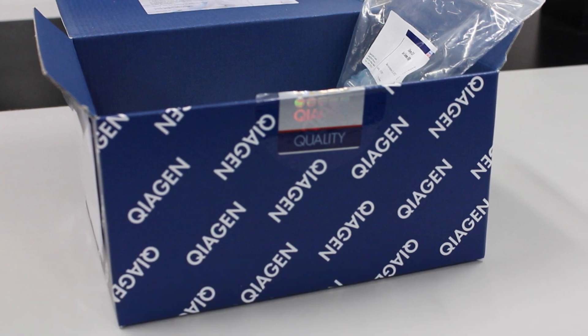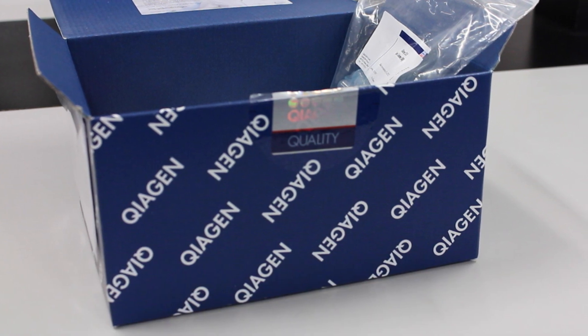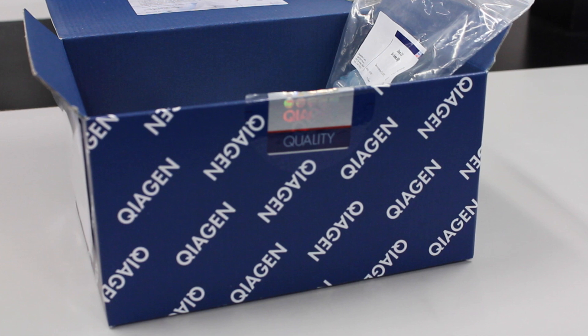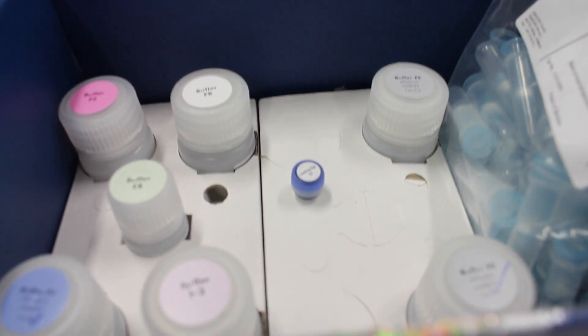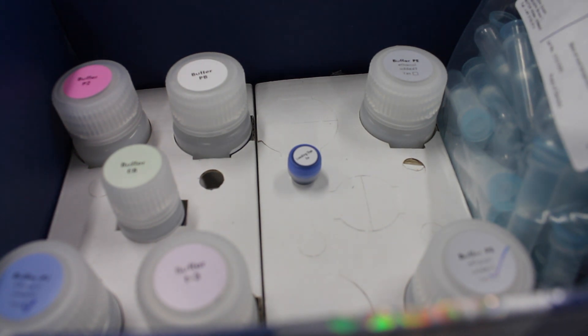Mini preps are used to isolate and purify plasmid DNA from bacterial cells. The following mini prep protocol was carried out using the QIAprep Spin miniprep kit provided by Qiagen. All the buffers required are provided in the kit.